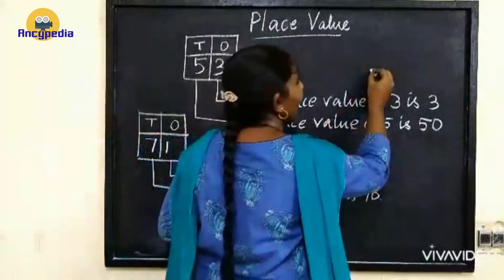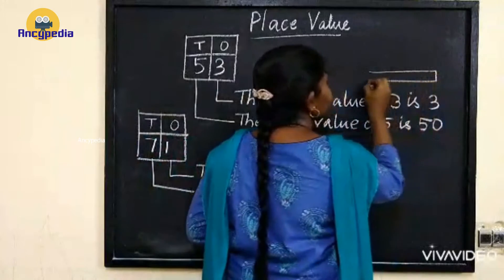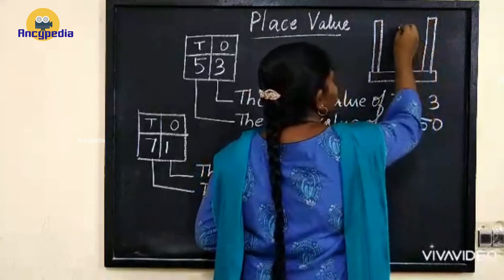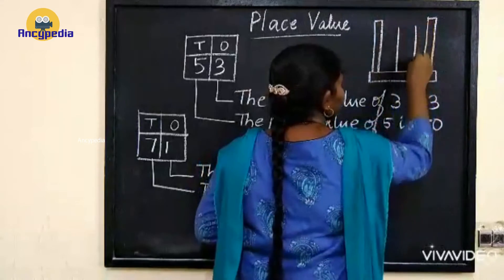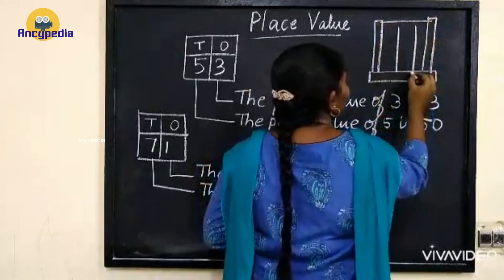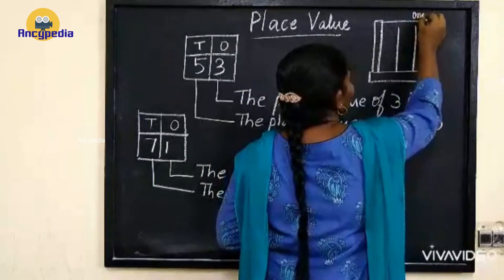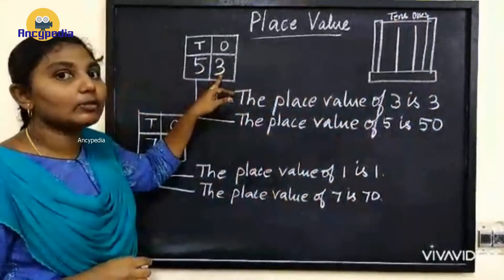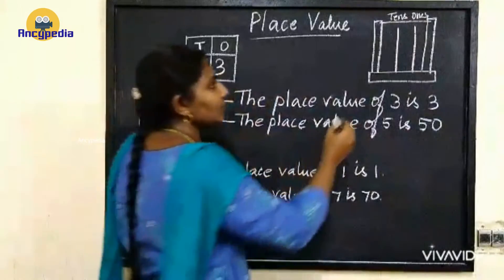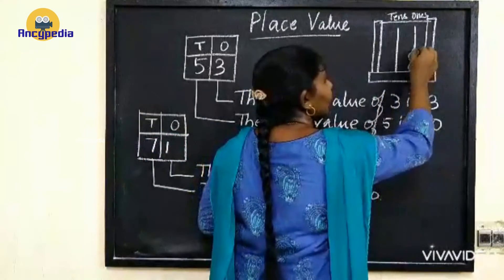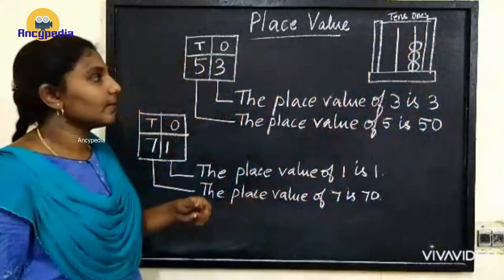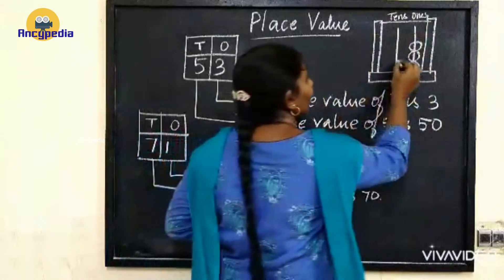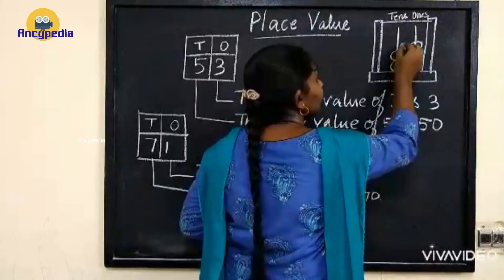Okay so you have to draw an abacus. This is 1's place and 10's place. Here we have 3 in 1's place, so you have to draw 3 beads in 1's place. And you have to draw 5 beads in 10's place.